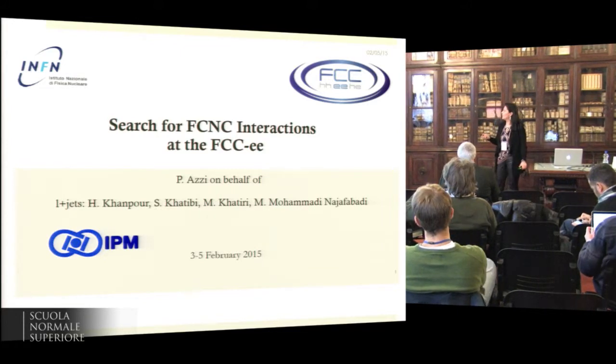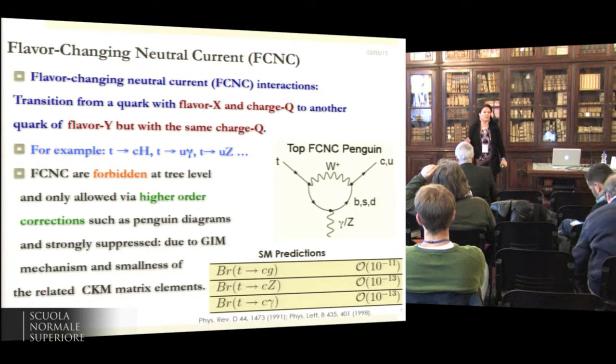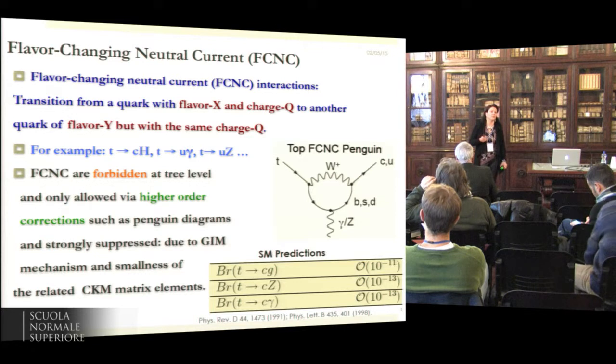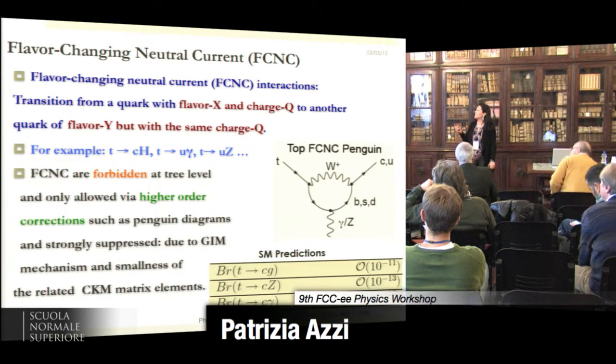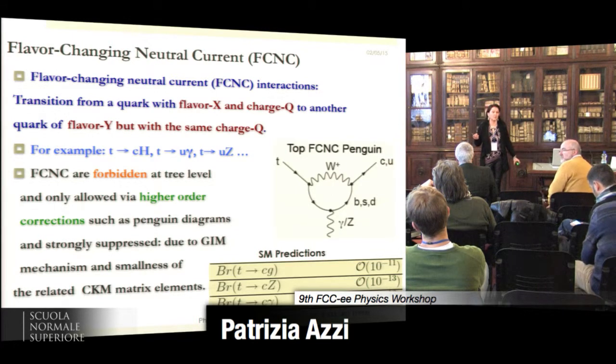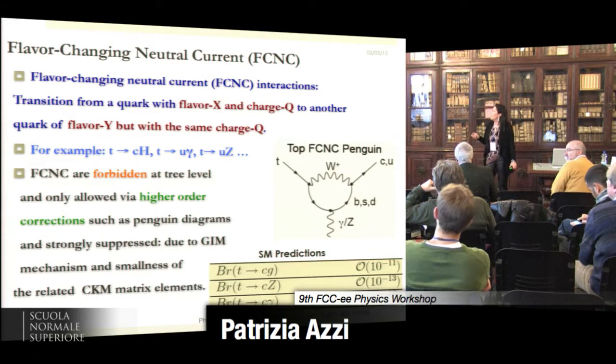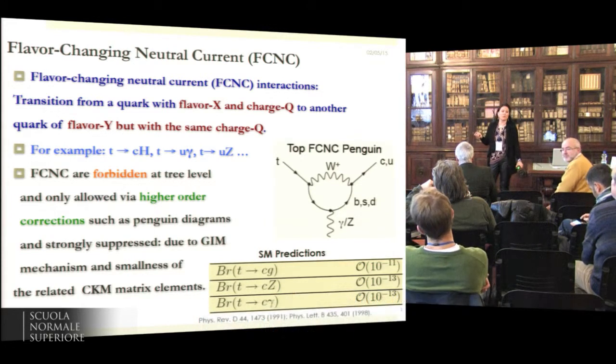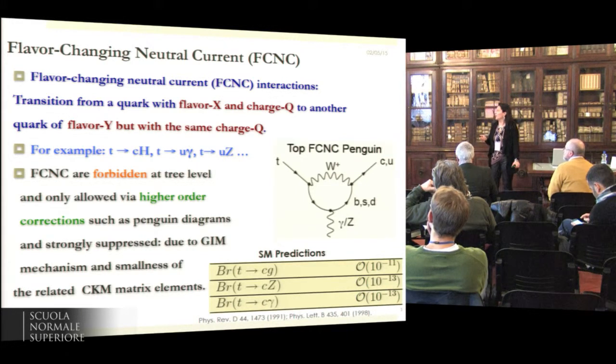This is one of the very interesting things we can do with the FCC because it's a flavor-changing neutral current transition that does not exist in the standard model. Basically they are forbidden at tree level, so the predictions from the standard model are very small, and it's a very easy way to find beyond the standard model physics.